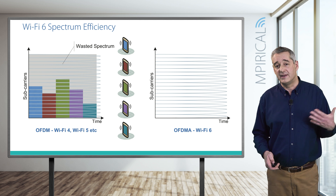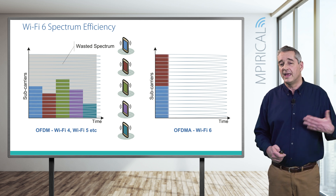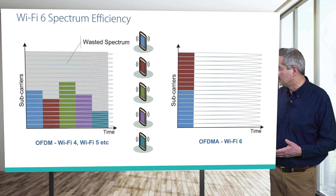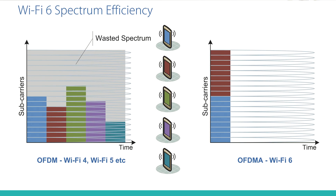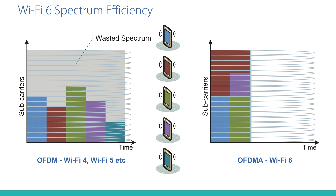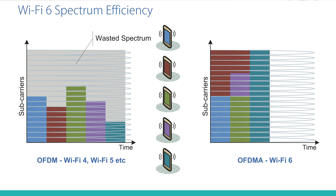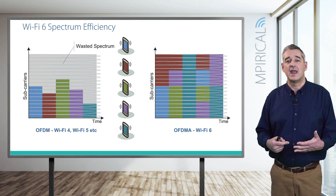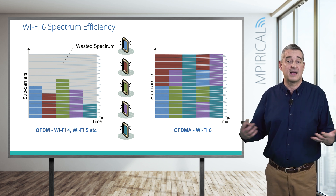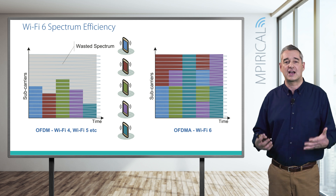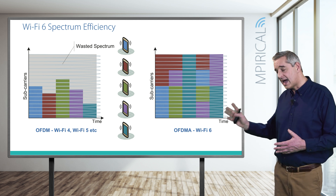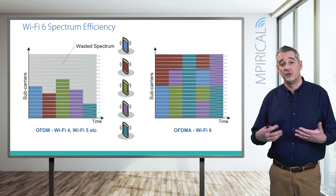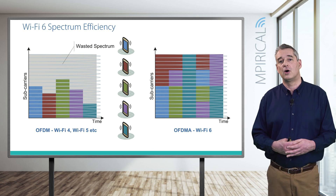Compare that to OFDMA supported by Wi-Fi 6. With the use of resource units, we can be more effective in the way we allocate sub-carriers. So to begin with we have two stations using the access point, switching to three, down to a single station having it in its entirety, to four, and then finally back to two again. Here now we don't have the wasted spectrum, assuming we have stations on the Wi-Fi network actually wishing to send data. Finally, we can also apply multi-user MIMO in the case of OFDMA, where multiple stations on different streams use sub-carriers of the available resource.